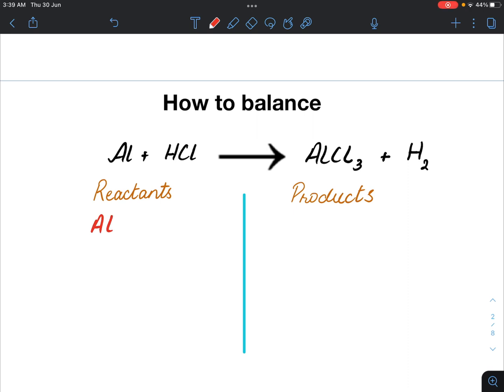We have one aluminum atom at the reactant site, one hydrogen atom, and one chlorine atom. On the product side, we have one aluminum atom, two hydrogen atoms, and three chlorine atoms.